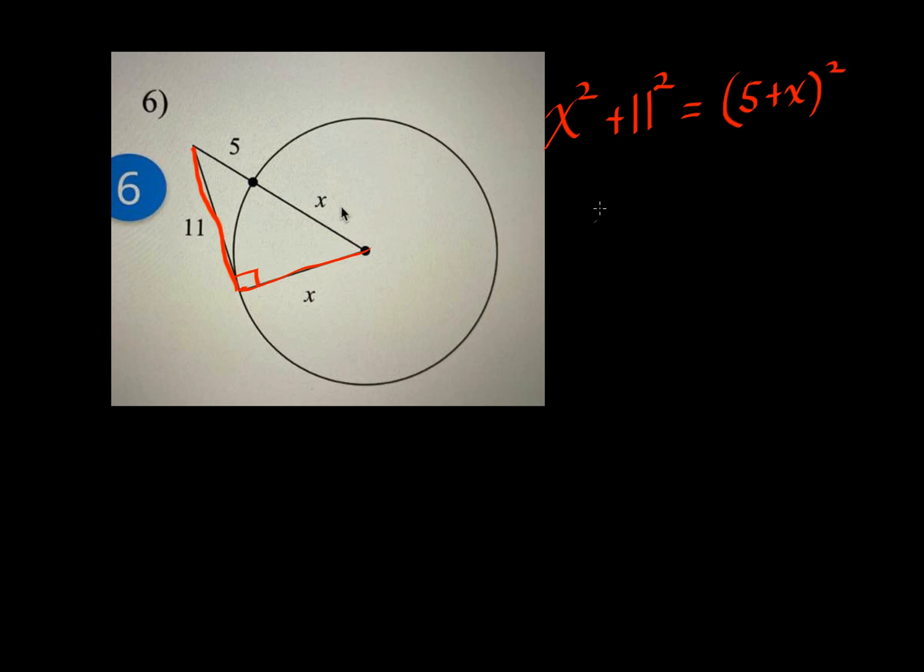Okay, so here on the left side we have X squared plus 121, which is equal to 5 squared, plus 2 times 5 times X, plus X squared.